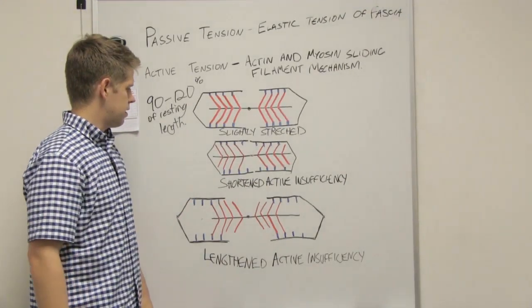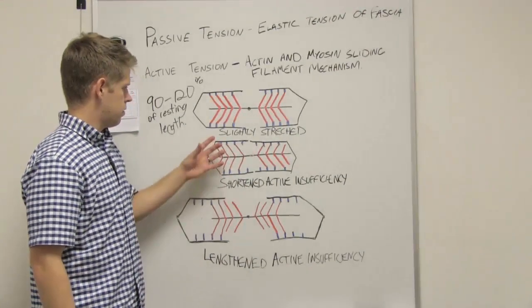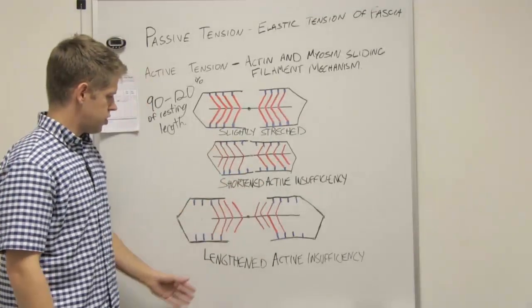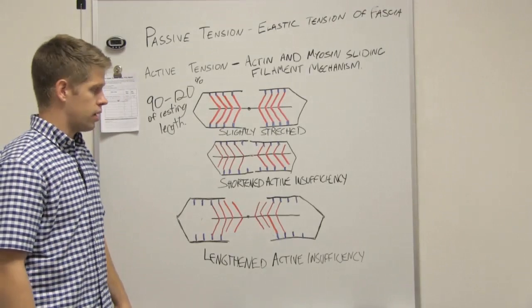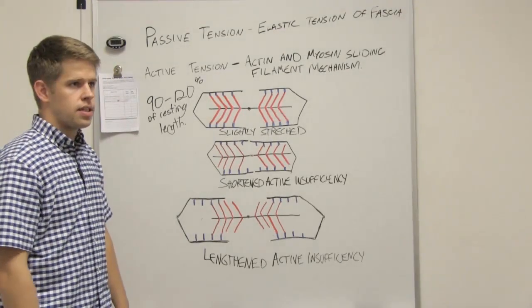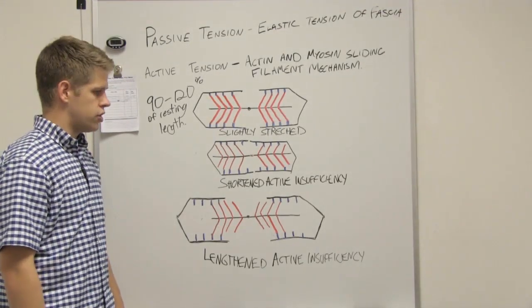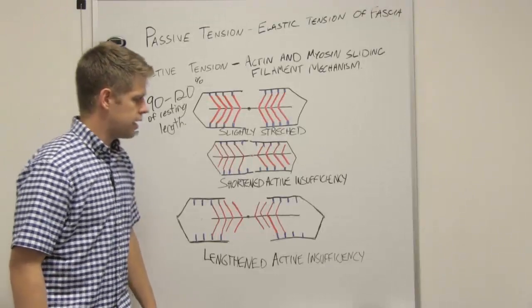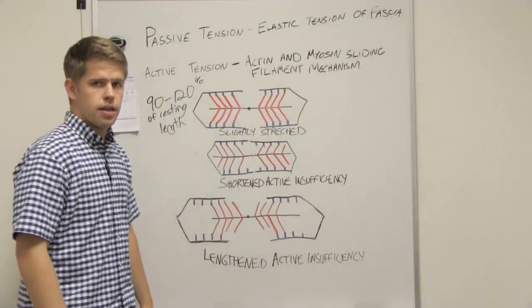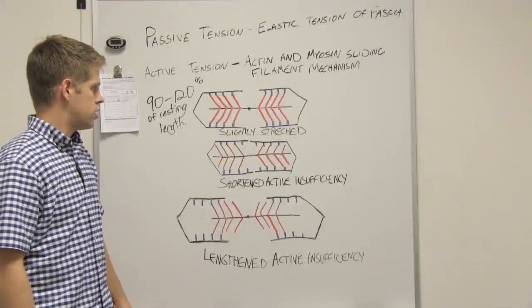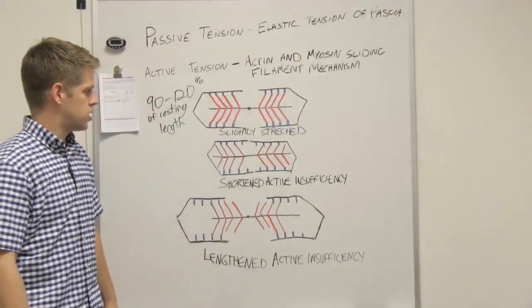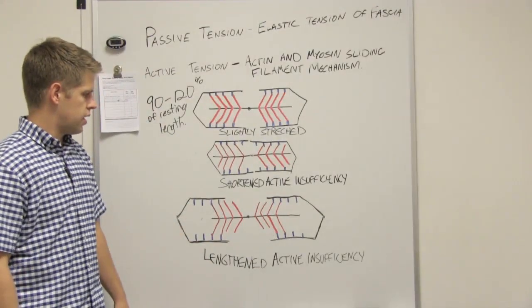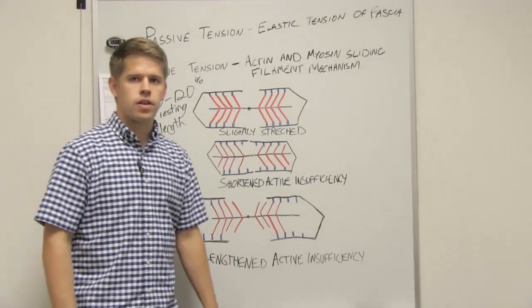So these concepts have important implications. When you see a high jumper going to jump, you don't see him bend down all the way down. You see him bend down a little bit as he prepares to jump. That's because his muscles are naturally going to the slightly stretched position. And it has various implications and is important for kinesiology.